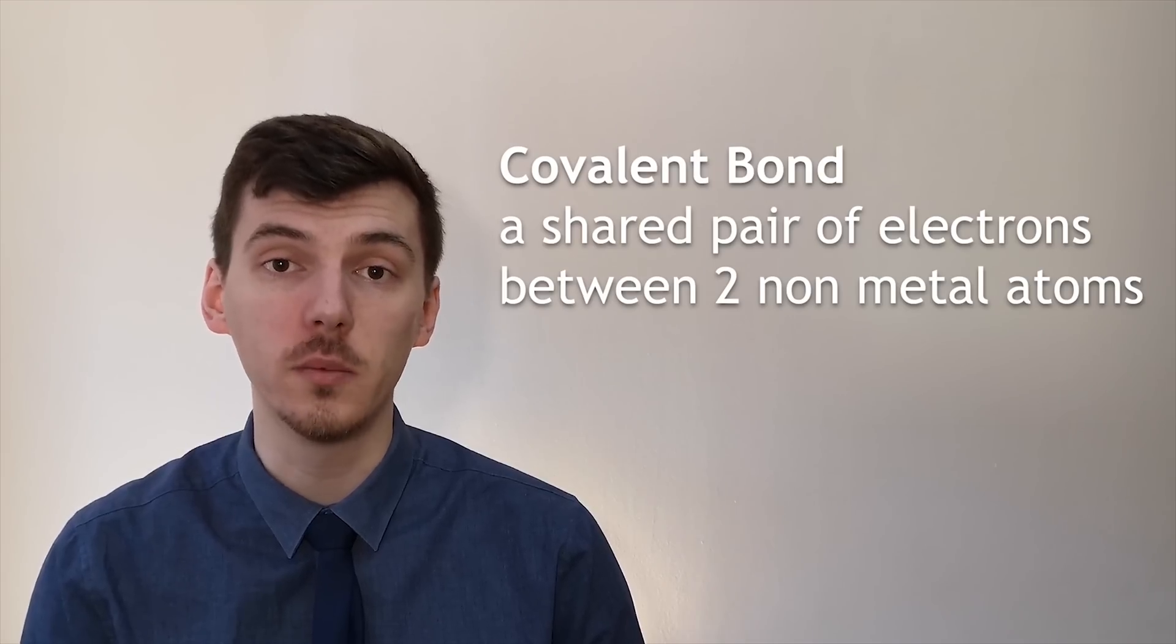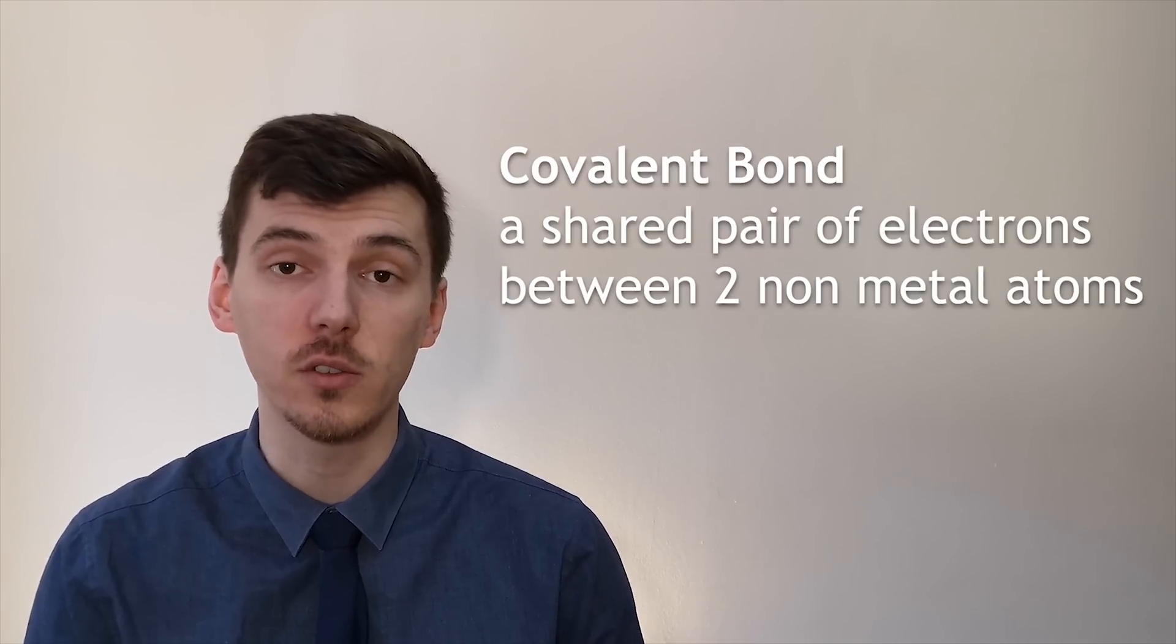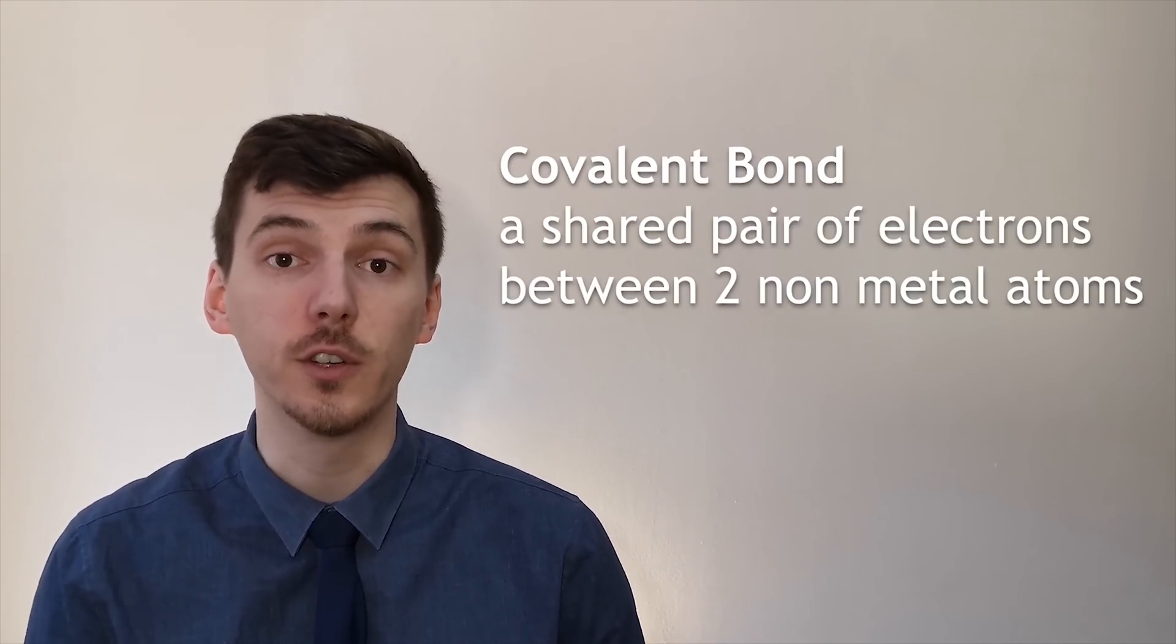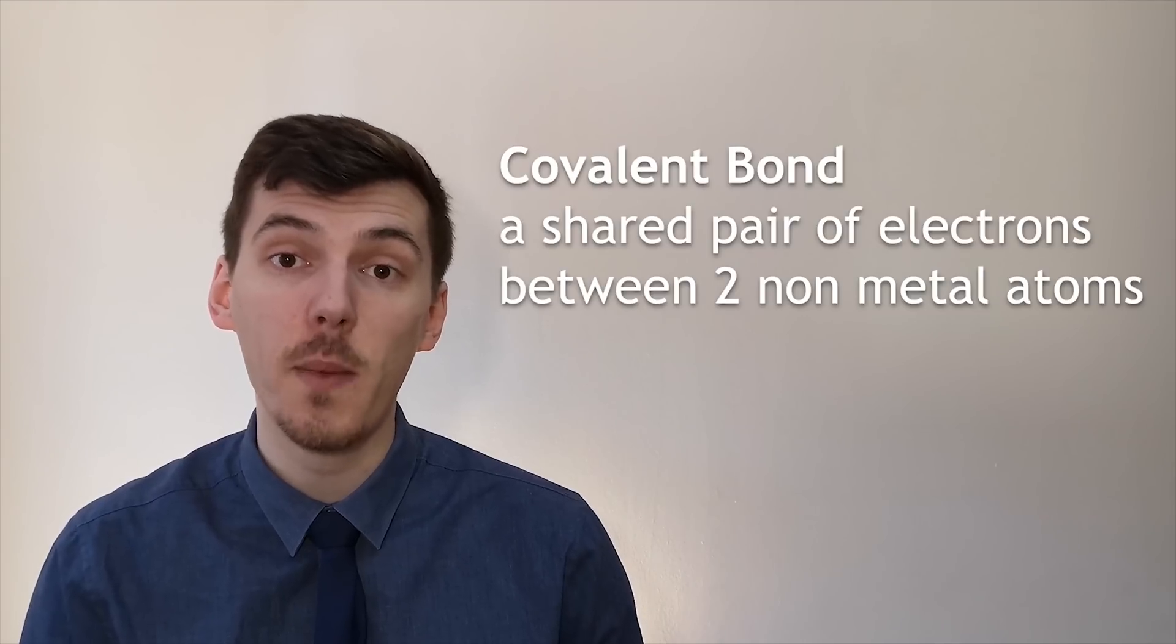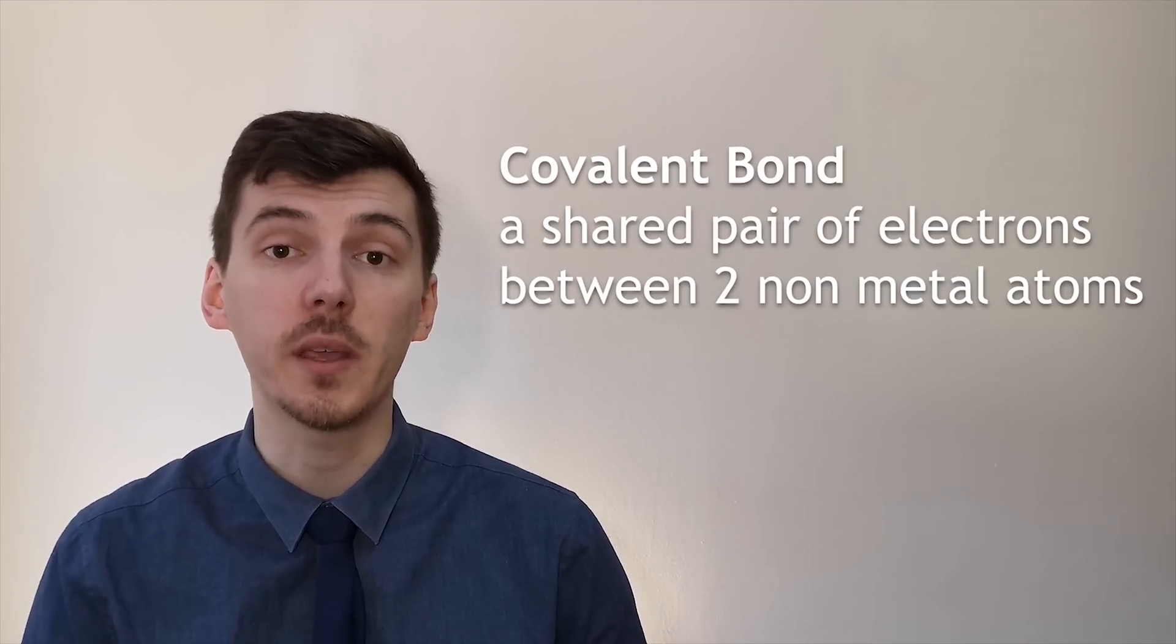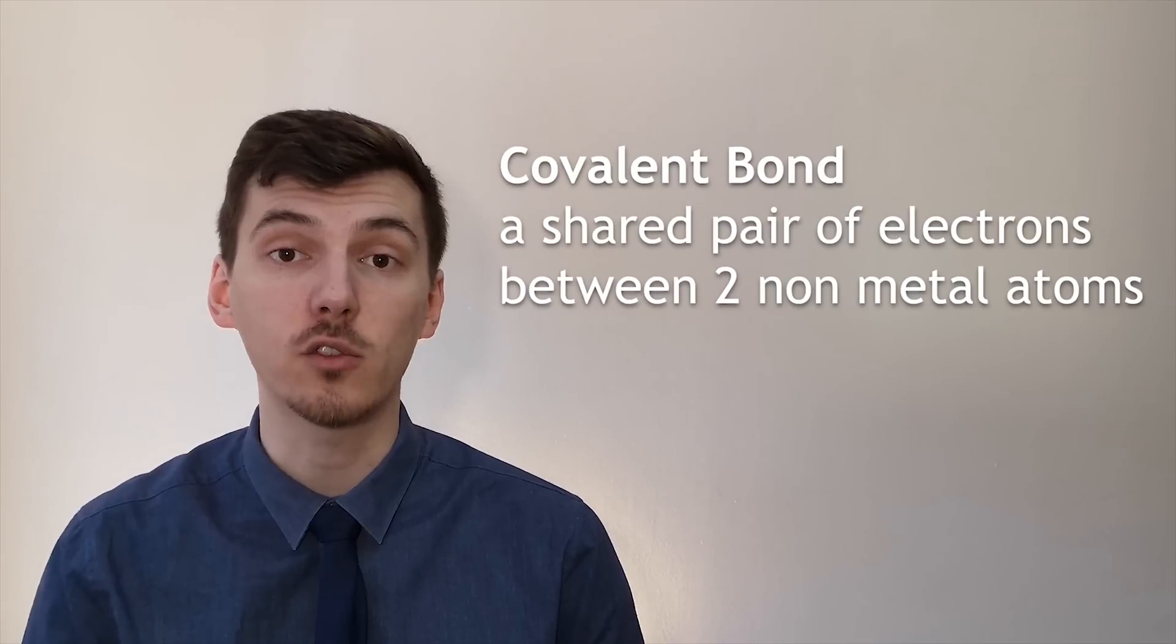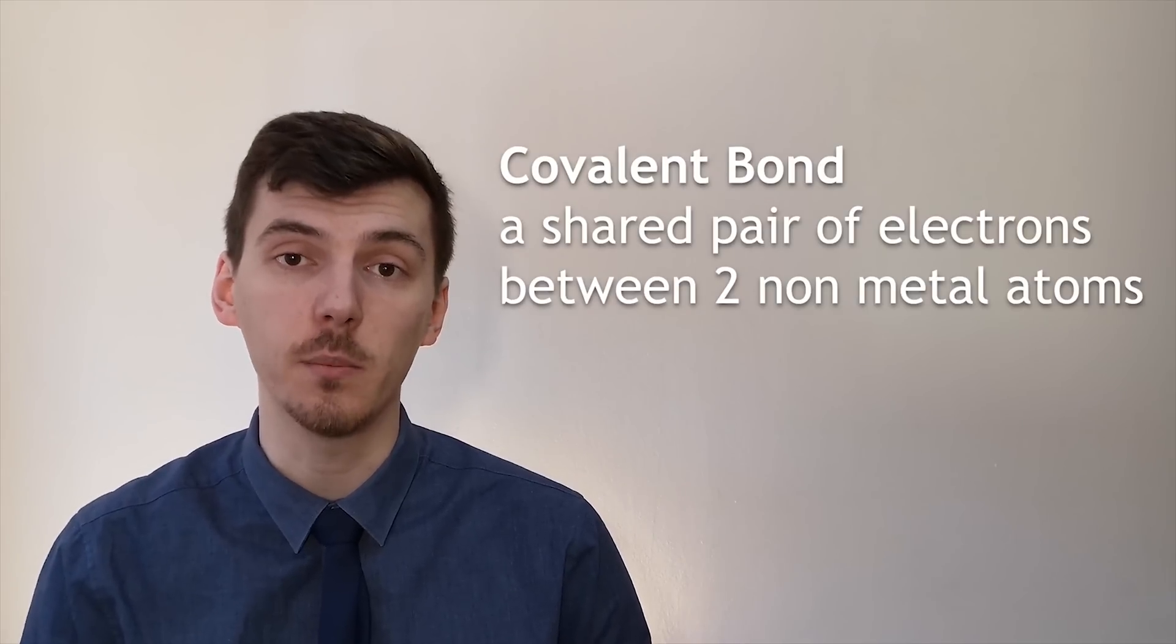When a covalent bond is formed, atoms share electrons and these are shared between two different non-metals. We normally say that a shared pair of electrons has been formed because both atoms normally share one electron each to form that covalent bond.